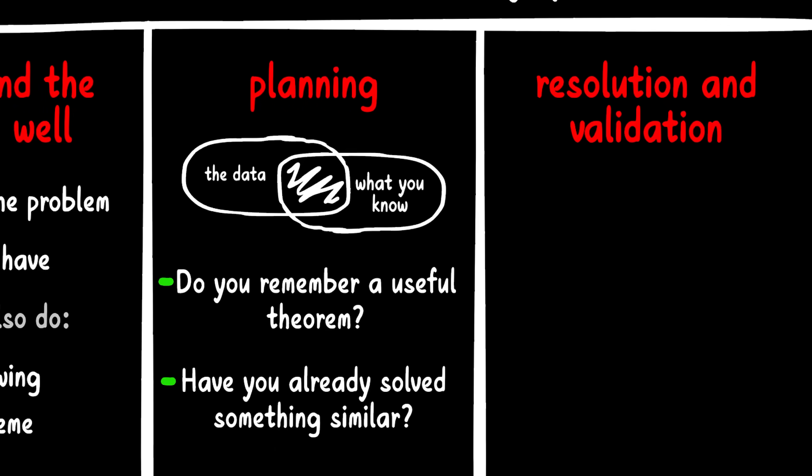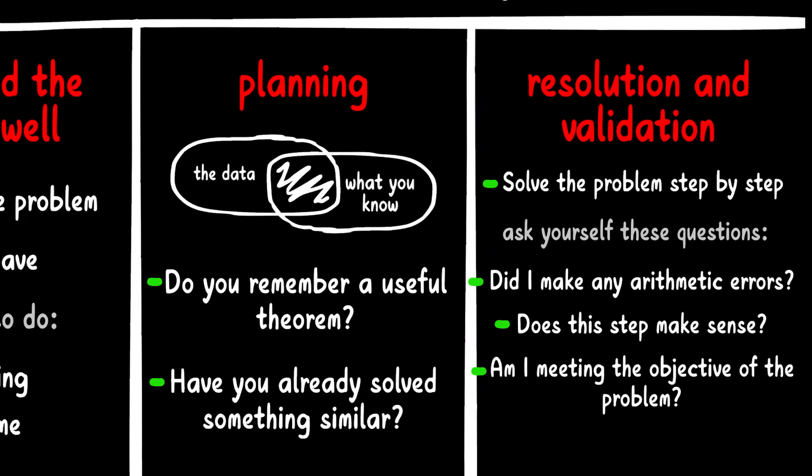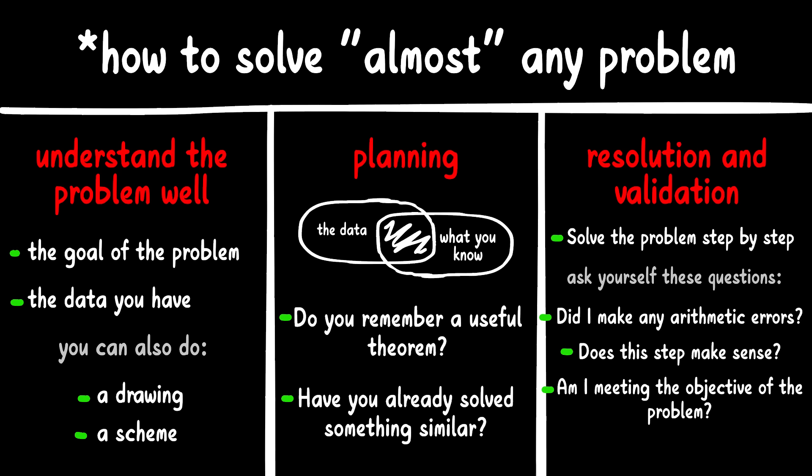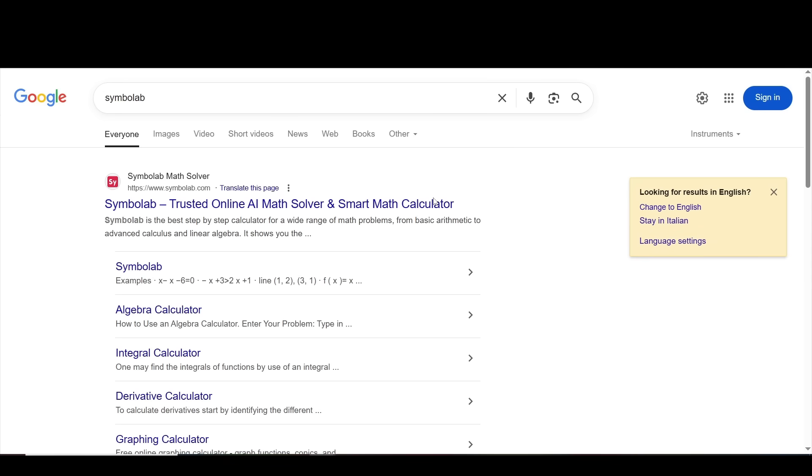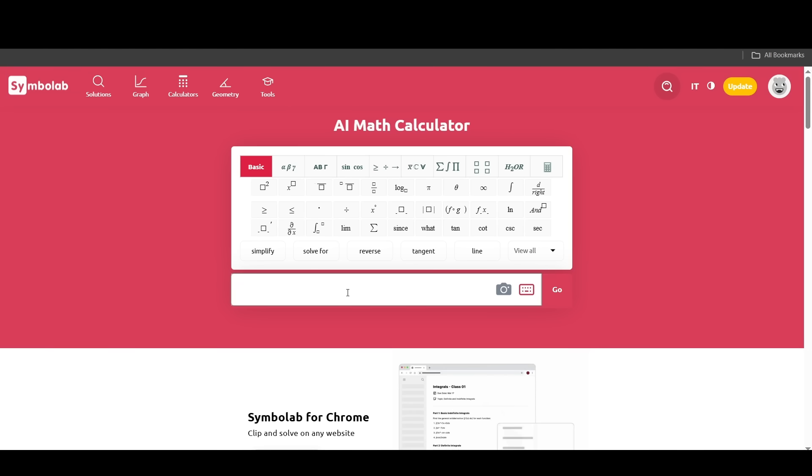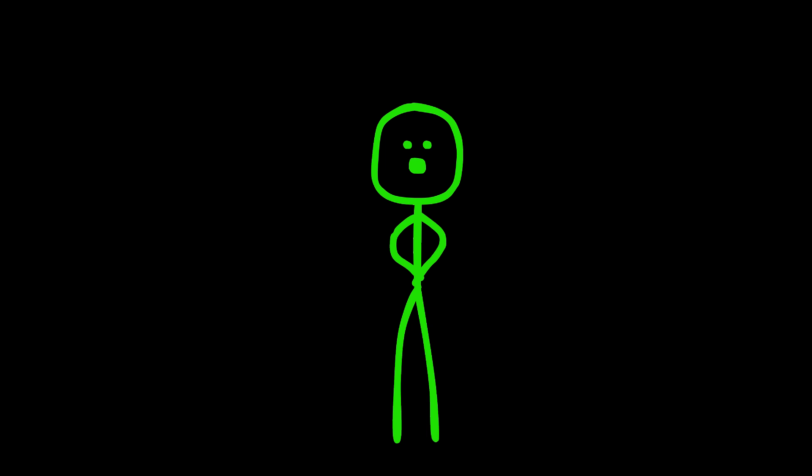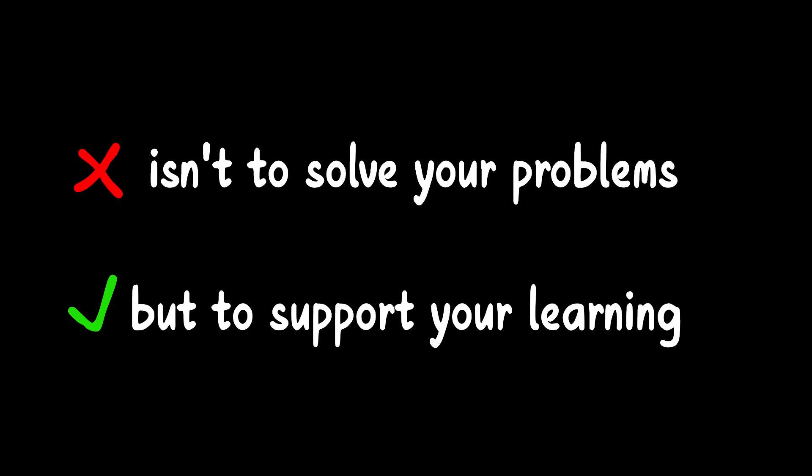The final step is solving and validating. Writing down the calculations neatly and as you go along, ask yourself these questions to check if everything makes sense. Finally, check your answer. Online, you can find tools like Symbolab that can help you verify your solution. You can type in the problem or even upload a photo and it'll walk you through the steps. Keep in mind though, that the goal of these tools isn't to do the work for you, but to support your learning.